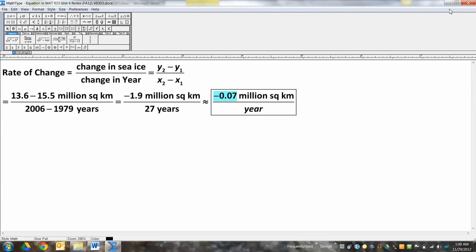And you keep your units. So the Y unit was million square kilometers, so you write that. And then the X unit was years. So it's million square kilometers per year. You can divide numbers, but you can't divide words with a calculator.